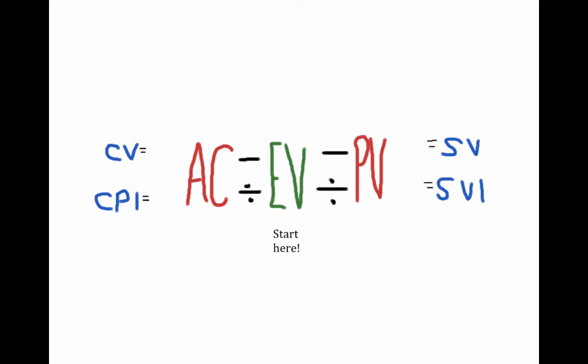Now, start from earned value and read from right to left to get the formulas for cost. For example, EV minus AC equals CV. Then, do the same from left to right to get the formulas for schedule. For example, EV minus PV equals SV.